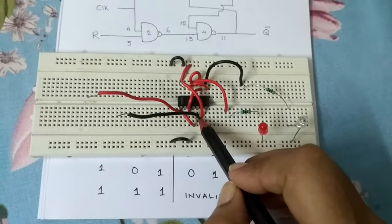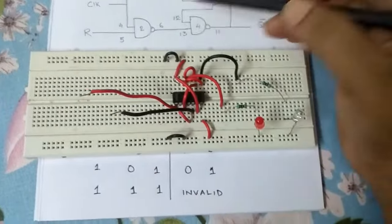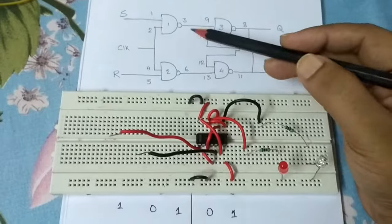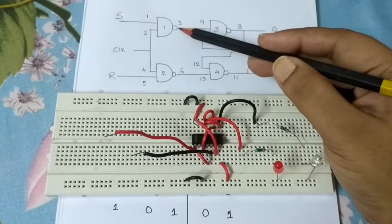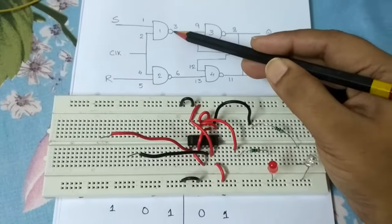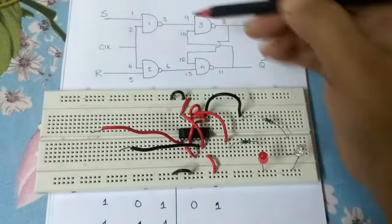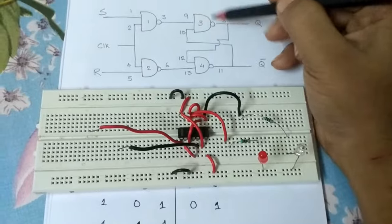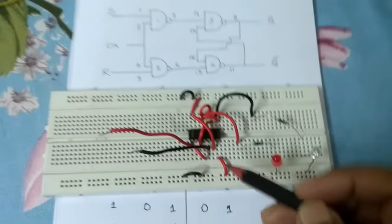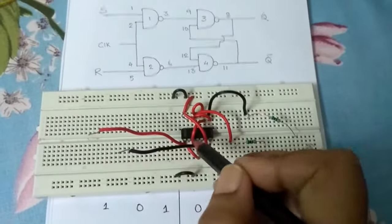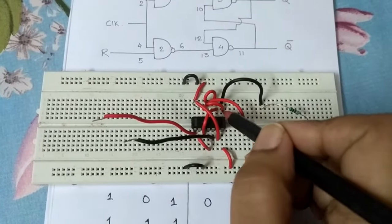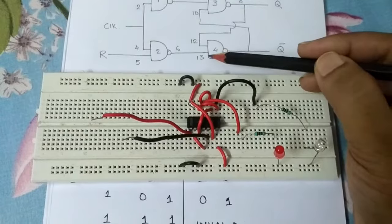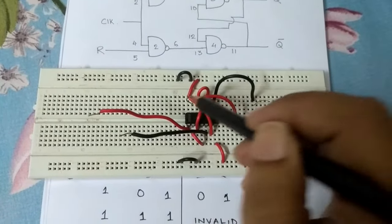After that, pin 5 is connected to R. This is my pin number 5 that is being connected to R as you can see over here. Pin number 6 is the output of the second NAND gate and pin number 3 is the output of the first NAND gate. 3 goes to 9, the third NAND gate input, so I have connected 3 to 9 over here.